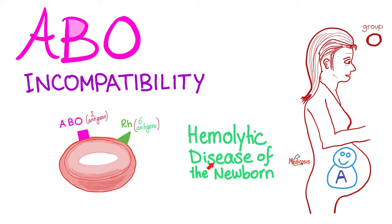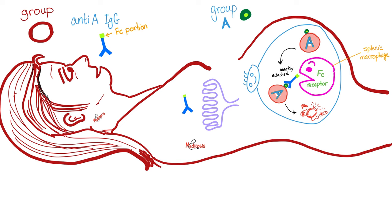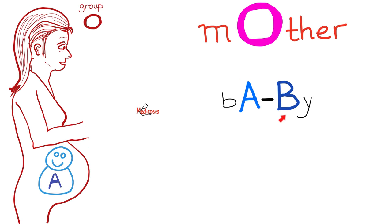ABO incompatibility was discussed in detail in my hematology playlist. Just remember it causes hemolysis in the baby, and it usually happens when the mother is blood group O. The mother has no antigens but she has anti-A and anti-B antibodies. If the baby is blood group A, these antibodies can cross the placenta and destroy the baby's blood. The mother sends her anti-A antibodies across the placenta to destroy the red blood cells of the baby.